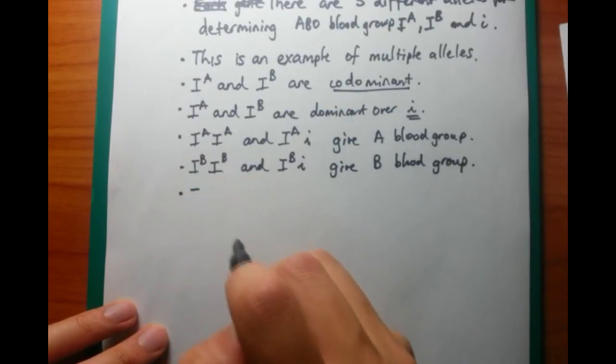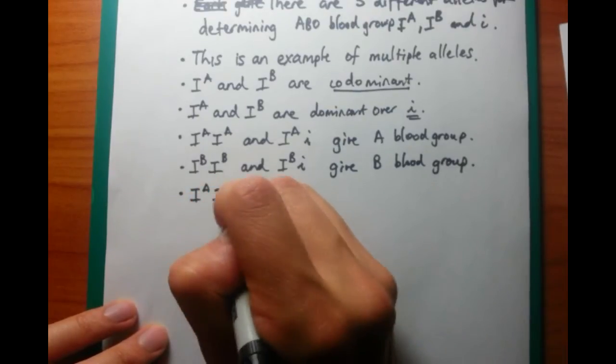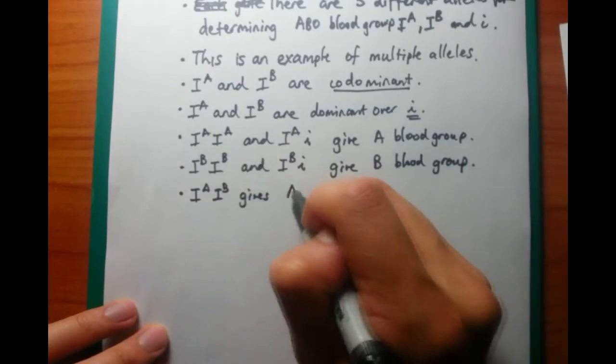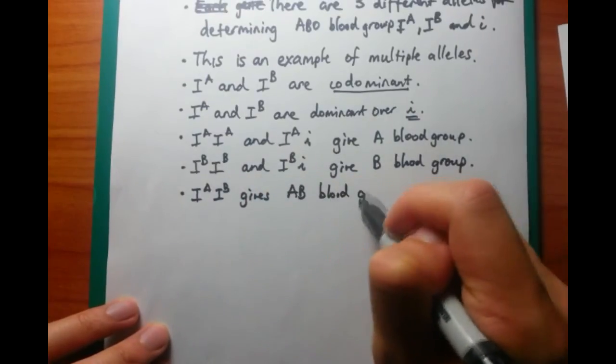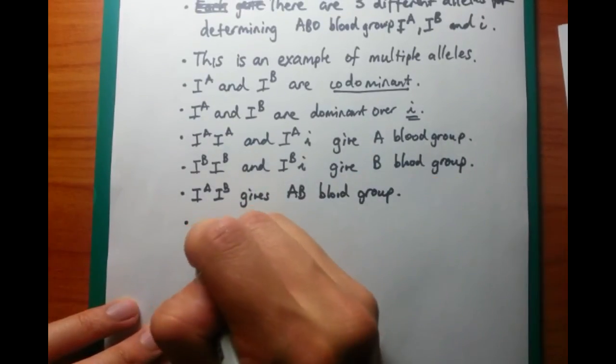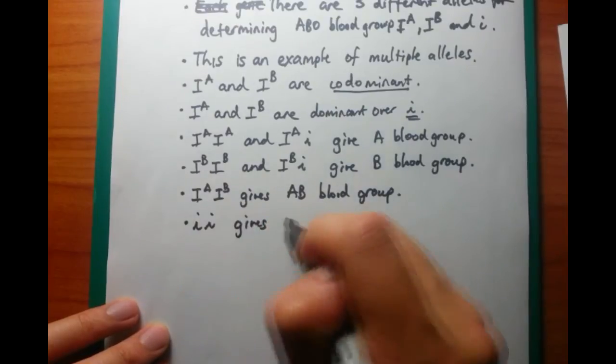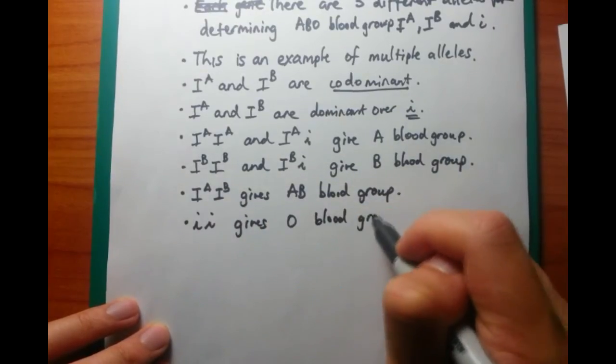And the next few marks are relatively easy to get. All you need to describe is how you get particular blood groups. Think genotype, think phenotype. Think phenotype, and how do you get a particular phenotype? Let's talk about A blood group.